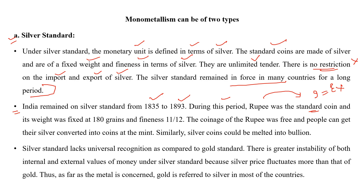India का जो rupee coin था, जो standard coin था, उसका weight fix किया गया था — 180 grains (ये gram नहीं, ये grains है)। और fineness थी 11 by 12, मतलब 11 portion silver का था और एक portion उसमें alloy मिलाया जा रहा था out of 12 parts। तो बहुत ज़ादा fine था, उसमें silver की मात्रा बहुत ज़ादा थी।